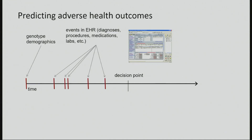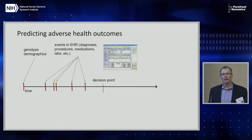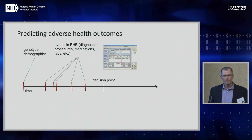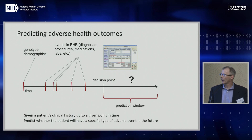To give you an overview of the general tasks we'll be considering: we're given a clinical history of a patient as represented in their electronic health record, as well as demographics, and in some cases genetics. Given some decision point in time, we ask whether this subject is at risk for a particular adverse outcome.